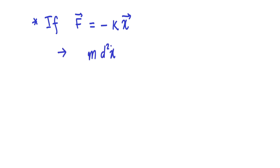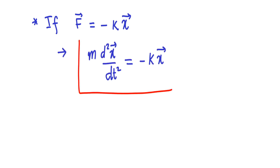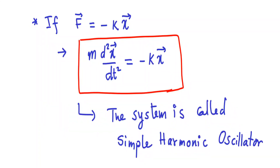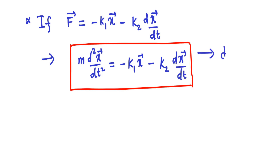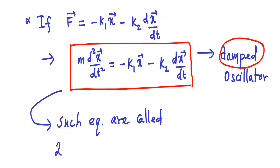Now, in Newton's second law, if you consider the force to be of the form F equal to minus KX, then the mathematical equation represents a system of simple harmonic oscillators, or just a simple pendulum. If you have an additional damping term in the force, as you see here, then the mathematical equation represents a system of damped oscillators. These equations are known as second order ordinary differential equations, or ODE, in mathematics.